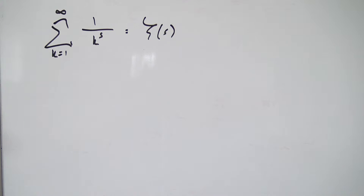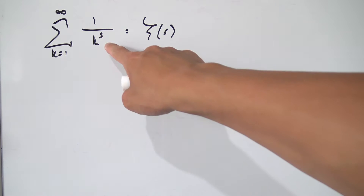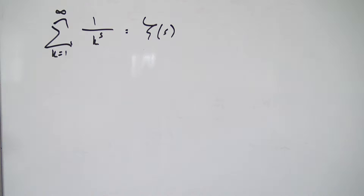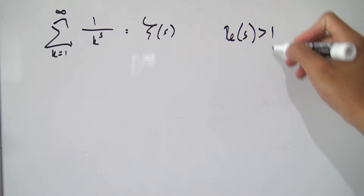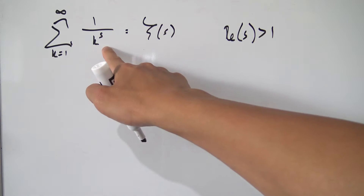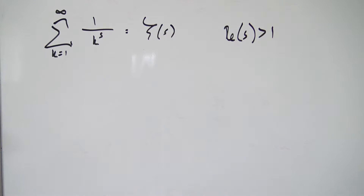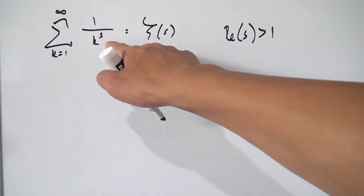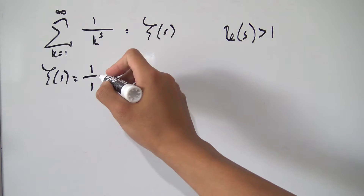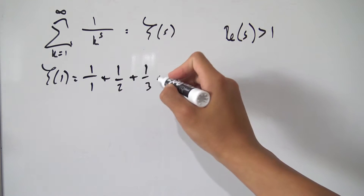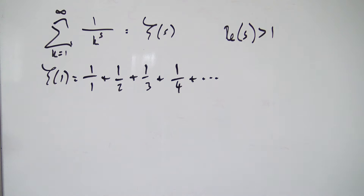Hello everybody, and today we're going to be looking at how we can analytically continue the definition of our Riemann zeta function to the whole right half of the complex plane. Our zeta function is defined as this infinite sum, and this sum converges only for the real part of s being greater than one. For anything less than one, this sum will diverge. The classic case is s equals one, giving zeta of one as one over one plus one over two plus one over three — the harmonic series, which diverges.